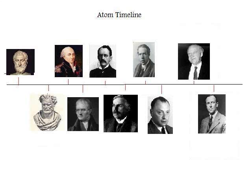In 1932, Chadwick discovered the neutron. He saw that it had a slightly heavier mass than the proton, and it had no charge. And that was our timeline.